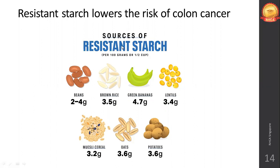Resistant starch has been linked with colon cancer - increasing intake of resistant starch-rich food decreases colon cancer risk; resistant starch is inversely proportional to colon cancer. Good sources include beans, brown rice, green bananas, lentils (tuvar dal, moong dal), muesli cereals, oats, and potatoes.